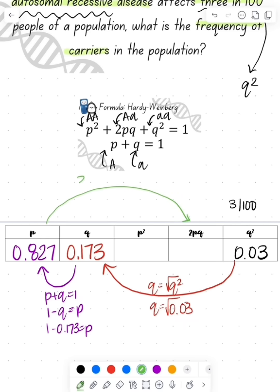So then I need to solve for my 2pq because that's my carrier frequency. So we do 2 times my p times my q, which is going to give me 0.286.